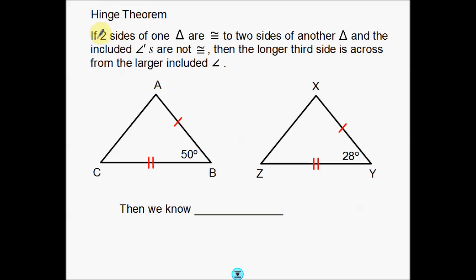Here we go: if two sides of one triangle are congruent to two sides of another triangle and the included angles are not congruent, then the longer third side is across from the larger included angle.